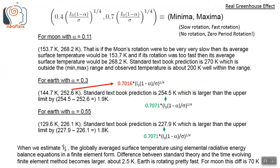When we estimate the actual globally averaged surface temperature using the elemental radiative energy balance equations in finite element form, these differences of 1.8–1.9 Kelvin will further increase to about 2.5 Kelvin. This 2.5 Kelvin is as such pretty low because Earth is rotating very fast already. For the moon, this difference turns out to be 70 Kelvin because the moon is rotating very slowly.